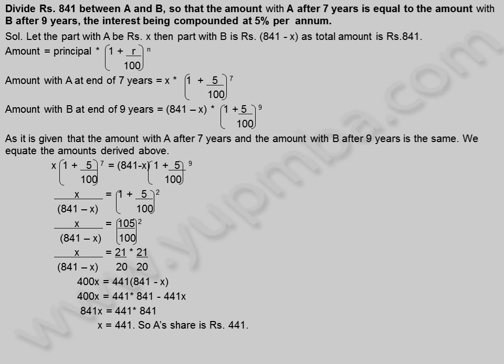So A's share is 441 rupees. B's share is equal to 841 minus 441 rupees, which is equal to 400 rupees.